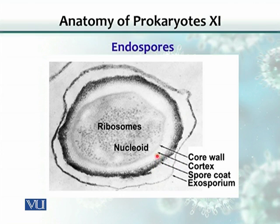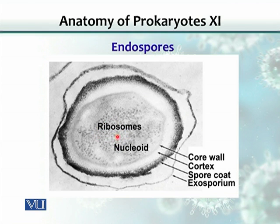A third layer, which is slightly off-white here, is the cortex. Then after the cortex, going from outside inside, is the core wall. And then there is a core in which the nucleus — the DNA and ribosomes — are packed or present.